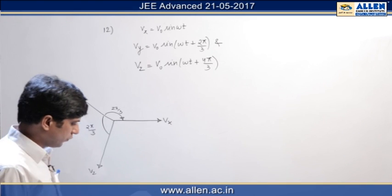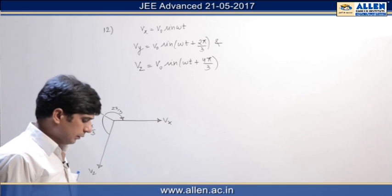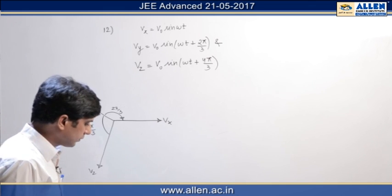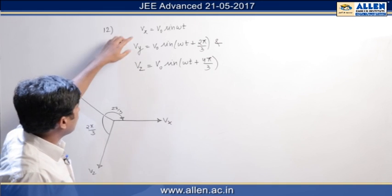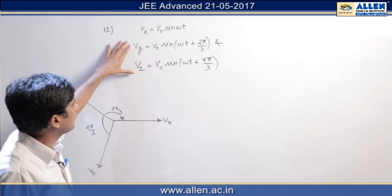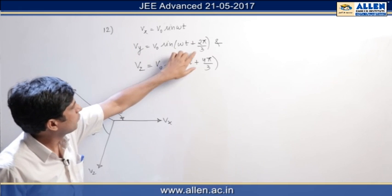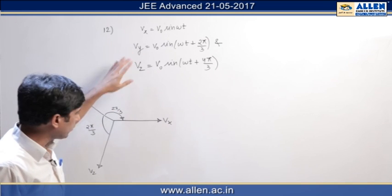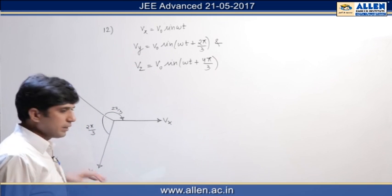In question number 12, we are asked to find potential difference between points xy, yz, and zx. Here, values of vx, vy, and vz are given in the question itself. By seeing the phase difference between vx and vy, and vz and vy, we can draw their phasors as shown in the diagram.